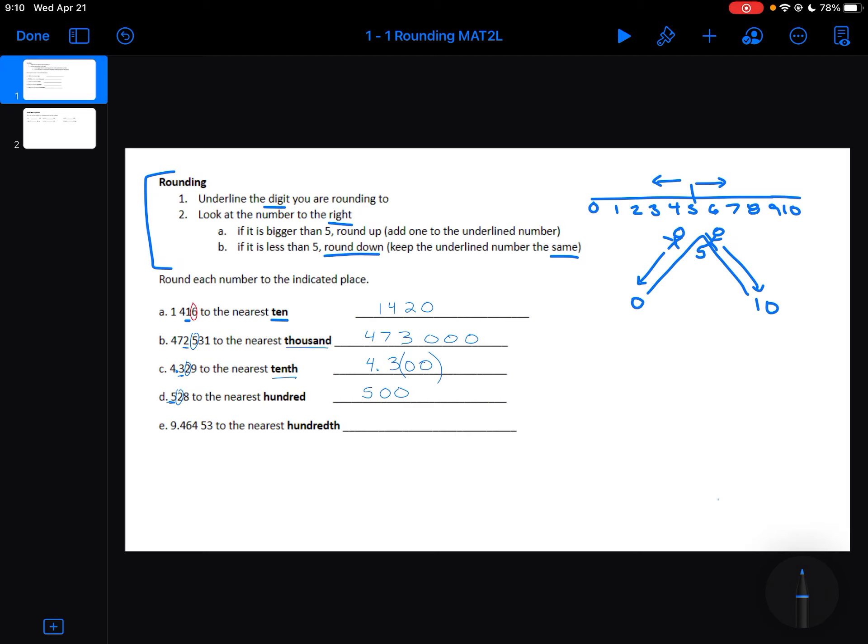Last example, this number here to the nearest hundredth. So I need to identify my number that is in the hundredth spot, which is a 6. The number immediately to the right is a 4. That is less than 5. So that means my underlined digit is going to stay the same, and you don't need to write the 0s after this one.